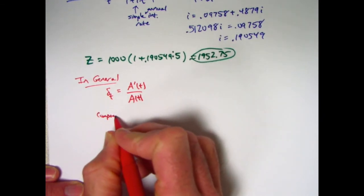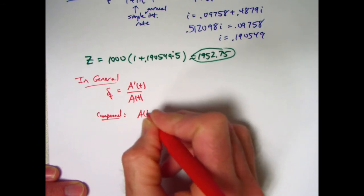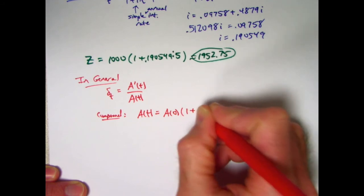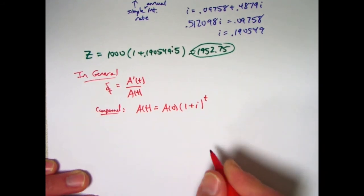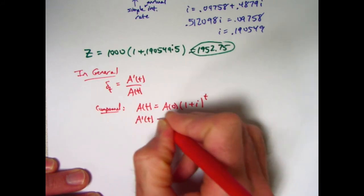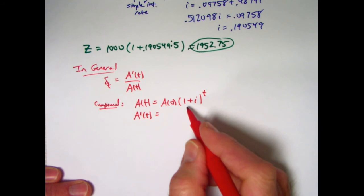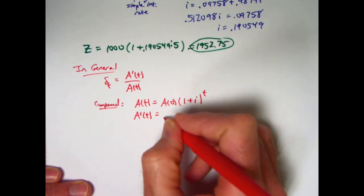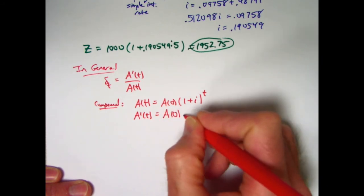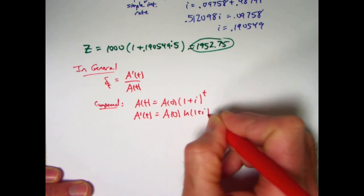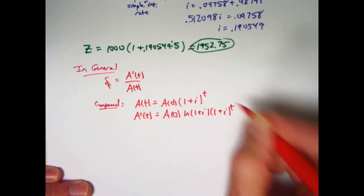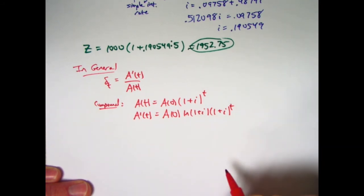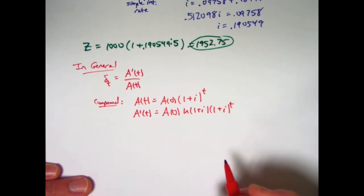For compound interest, with effective annual interest rate I, you can write the formula for capital A of T like this. Its derivative, using the fact that the derivative of 1 plus I to the T is natural log of 1 plus I times that same function, this derivative is going to be A of 0 times natural log of 1 plus I times 1 plus I to the T. This is an exponential function, the base is different than the number E, so you need to multiply by the factor natural log of whatever that base is, 1 plus I in this case.